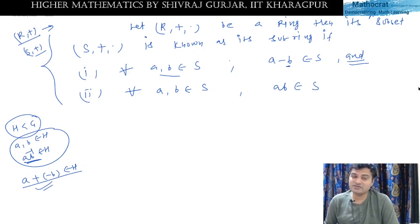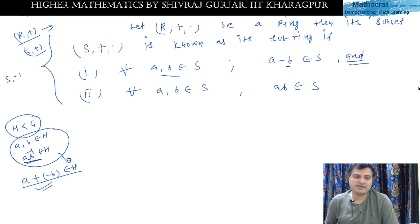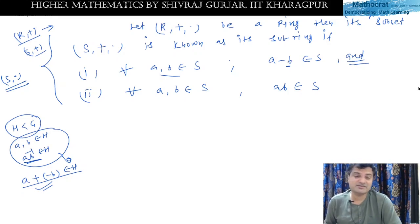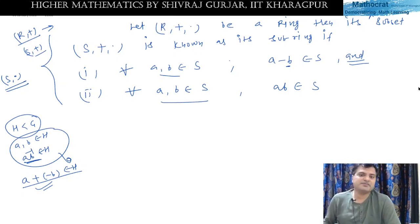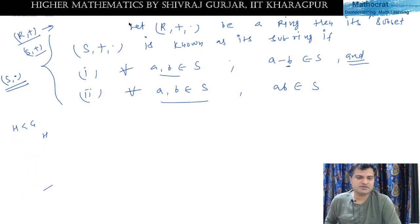For S under addition to be a subgroup of R under addition, it has to satisfy the first property. And for S to be a ring, S under multiplication must be a semigroup — meaning closure and associativity under multiplication must hold. So the second condition — closure under multiplication — is sufficient for that.